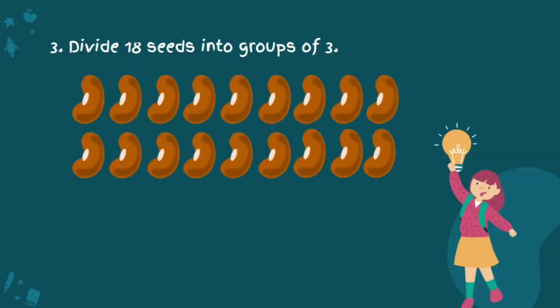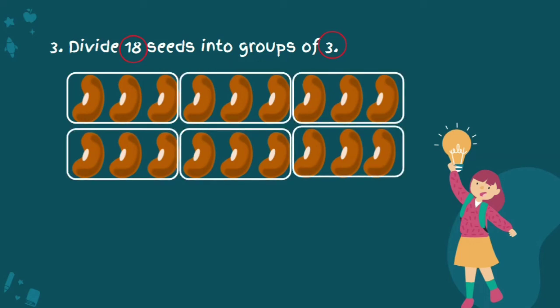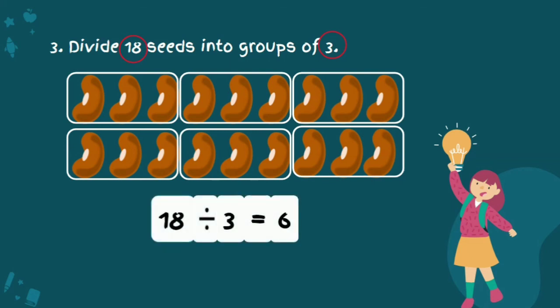Next example. Divide 18 seeds into groups of 3. The division sentence is 18 divided by 3. What is the answer? Now, you can answer this using repeated subtraction. Subtract 3 from 18 until you get 0. But here, I'm going to circle 3 seeds in one group. Like this. Until finish. Now, how many groups are there? Yes, 6. So the answer is 18 divided by 3 is equal to 6 because we have 6 groups. And this is the conclusion: there are 6 groups of 3 seeds.